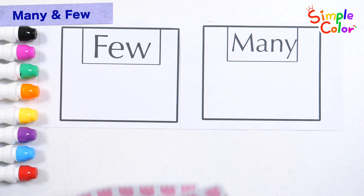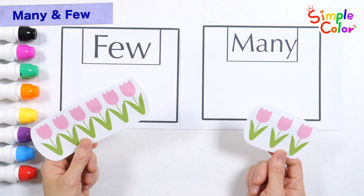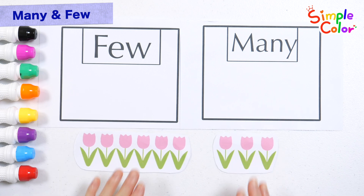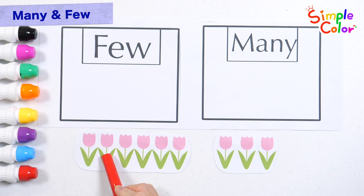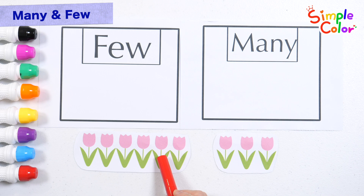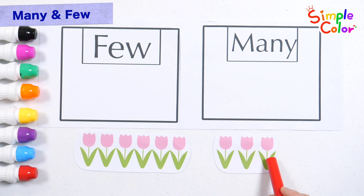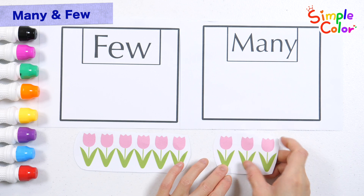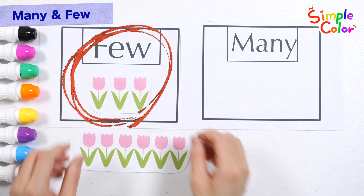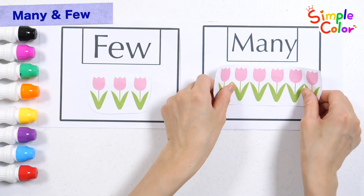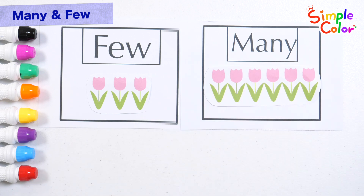There are flowers here. Shall we count the numbers and distinguish between many and few? One, two, three, four, five, six. One, two, three. Which one is more? Few. Many. Good job!